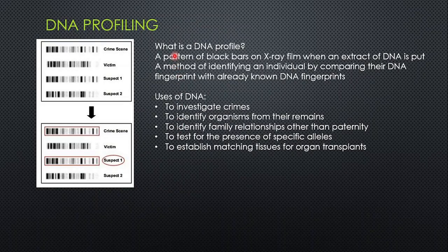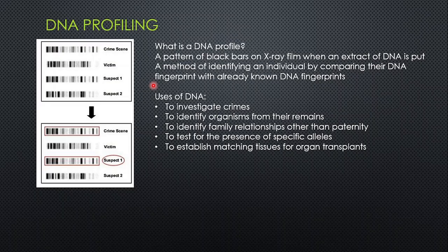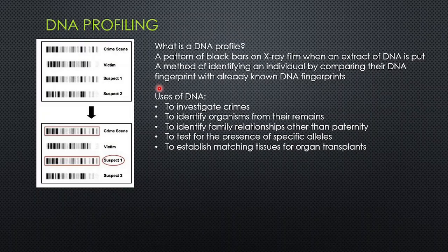Then we have DNA profiling. A DNA profile is a pattern of black bars on x-ray film when DNA is put through a chemical process. It is a method of identifying an individual by comparing their DNA fingerprints with already known DNA fingerprints. The word 'fingerprints' is an analogy to human thumb fingerprints, since everyone has their own unique fingerprint. Similarly, everyone's DNA profile — the black bars produced from their DNA — is unique to each person. It is an analogy; it is not actually a fingerprint.